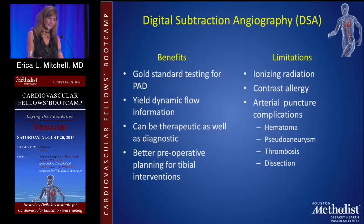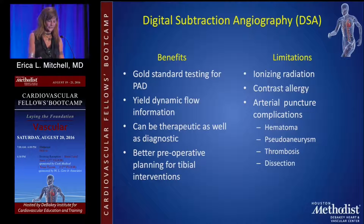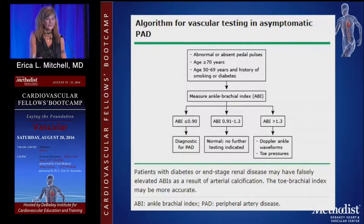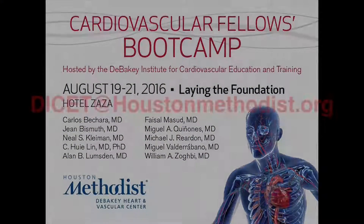Digital subtraction angiography has well-known benefits and limitations, with risks associated with arterial puncture. For the algorithm: asymptomatic patients need a good physical exam and ABI — ABI less than 0.9 indicates PAD, greater than 1.3 suggests small vessel disease. For symptomatic patients with symptoms but normal exam, exercise testing is the next step.